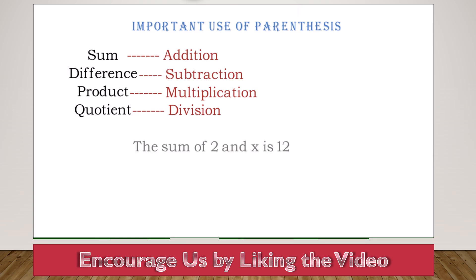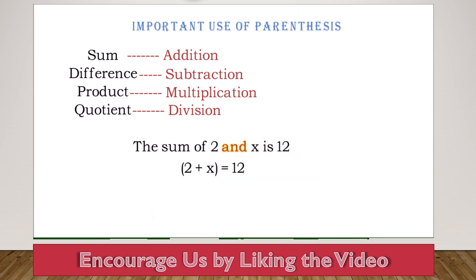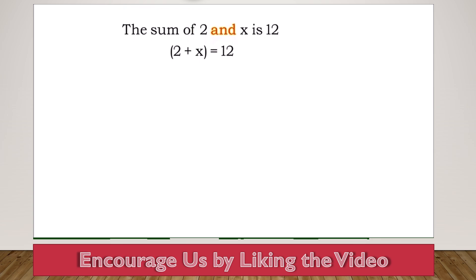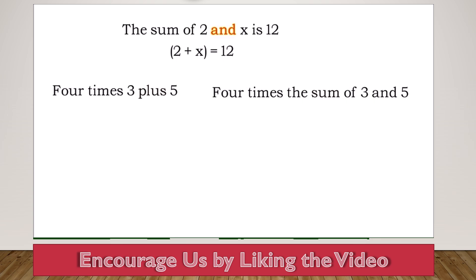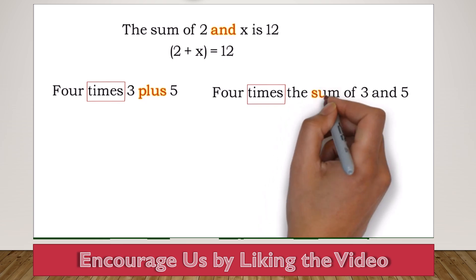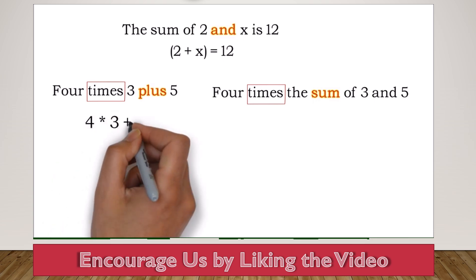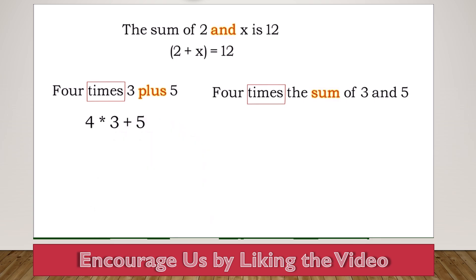For example, 'the sum of 2 and x is 12' — notice that 'and' is between the two numbers we are adding. Let's look at two statements: '4 times 3 plus 5' and '4 times the sum of 3 and 5.' Both have multiplication and addition, but they do not mean the same thing. The first — 4 times 3 plus 5 — from order of operations, we multiply first: 4 times 3 is 12, then add 5 to get 17.